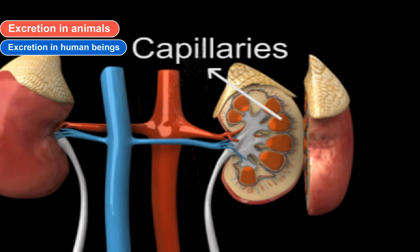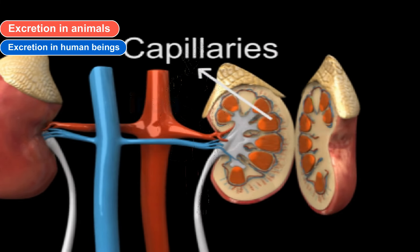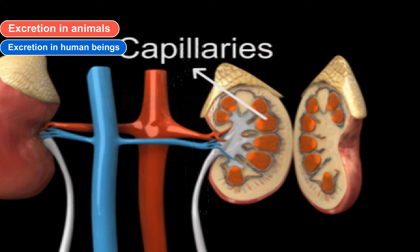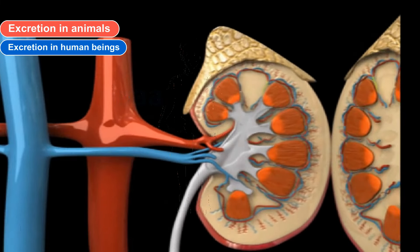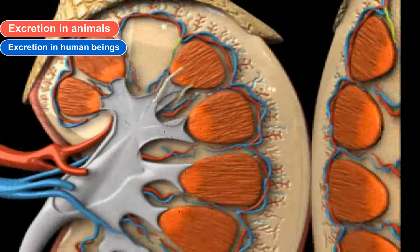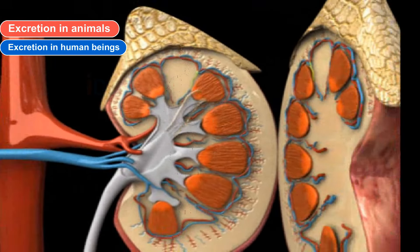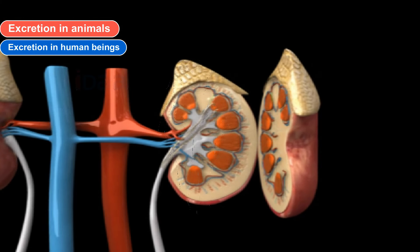Urinary Bladder. The urinary bladder is a bag-like structure which has muscles that can contract and relax. The urine that reaches the urinary bladder is stored here and excreted from time to time. Urethra is the opening of the urinary bladder through which urine is excreted.